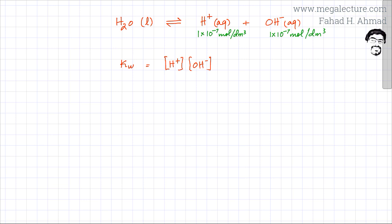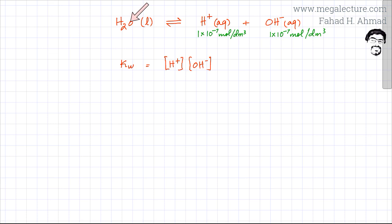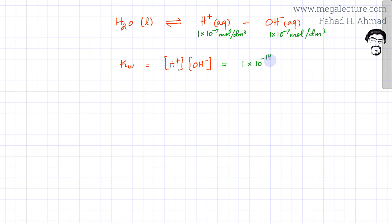Water ionizes very weakly, producing very few H⁺ and OH⁻ ions. The water constant KW is the product of the concentration of H⁺ and the concentration of OH⁻. It is an equilibrium constant — the concentration of products divided by the concentration of reactants. Since water is in large excess, we take it as a constant, so KW is simply the product of [H⁺] × [OH⁻]. At 25°C, KW equals 1×10⁻¹⁴ mol² dm⁻⁶.